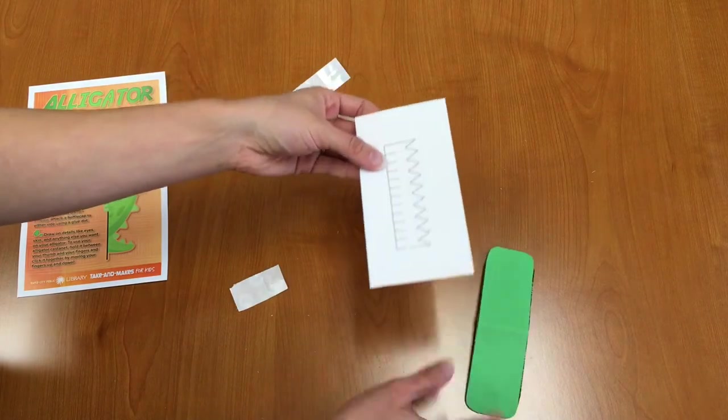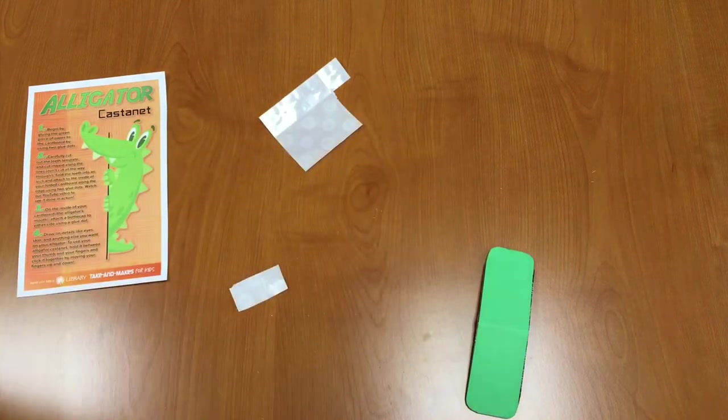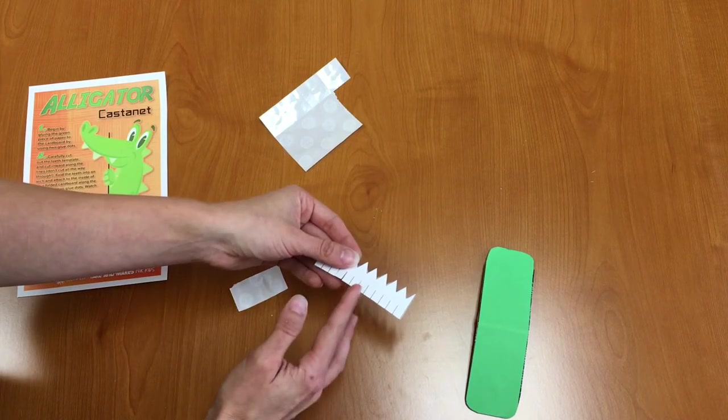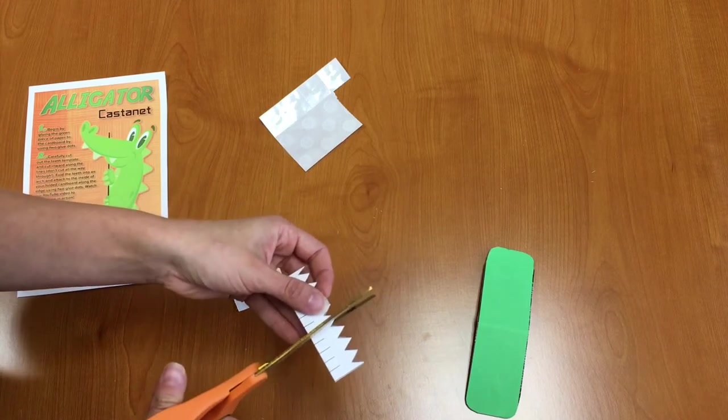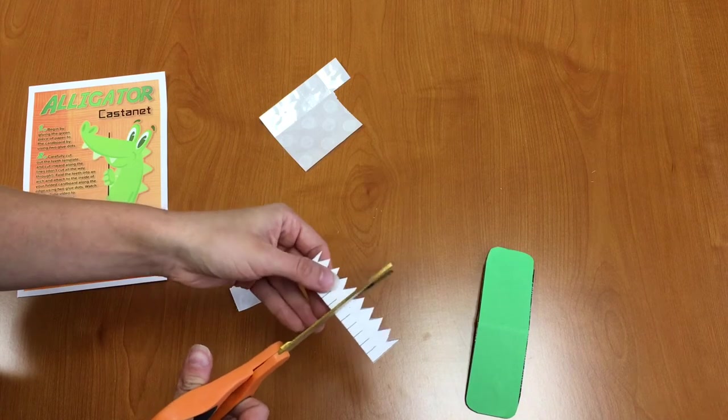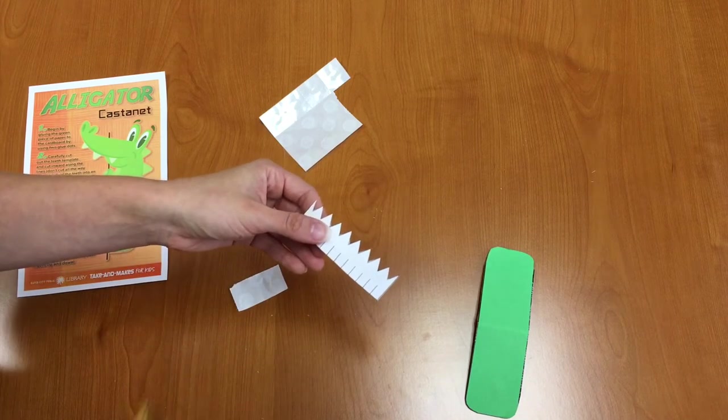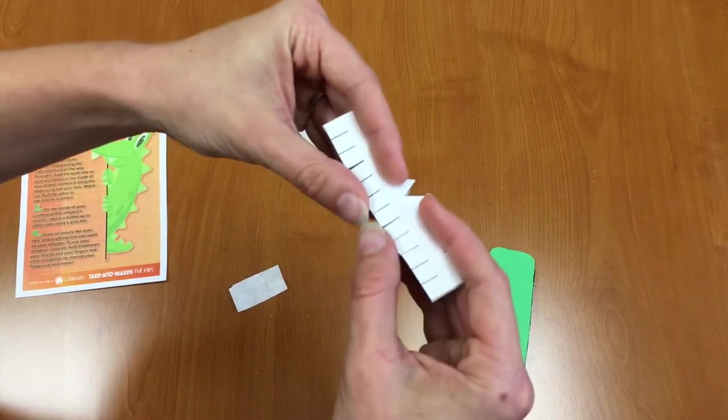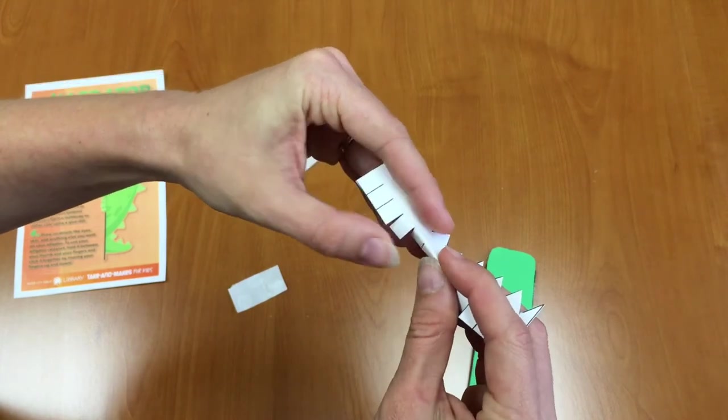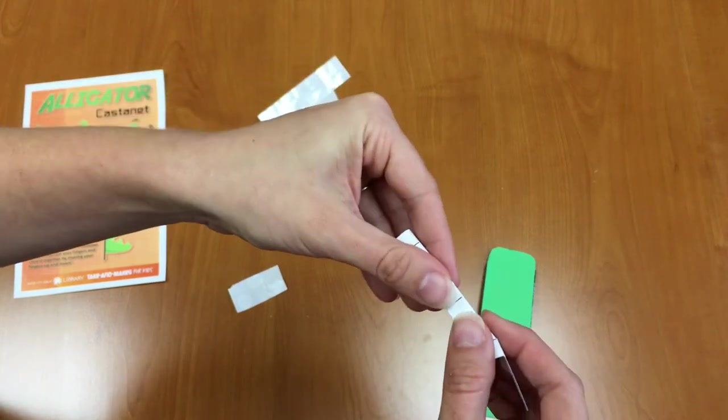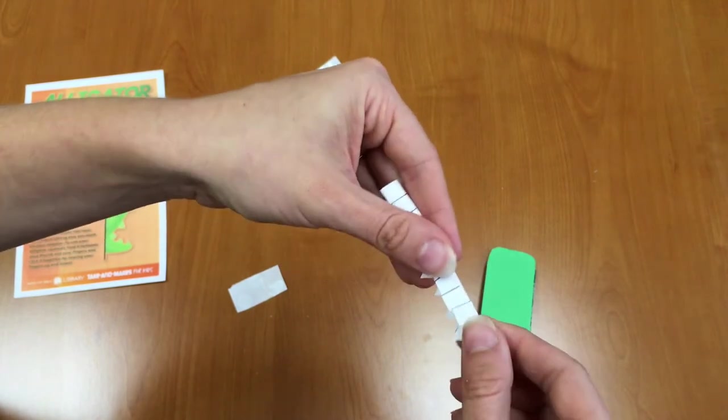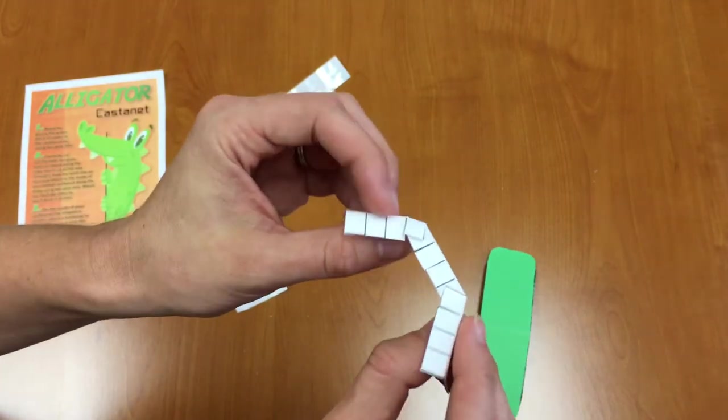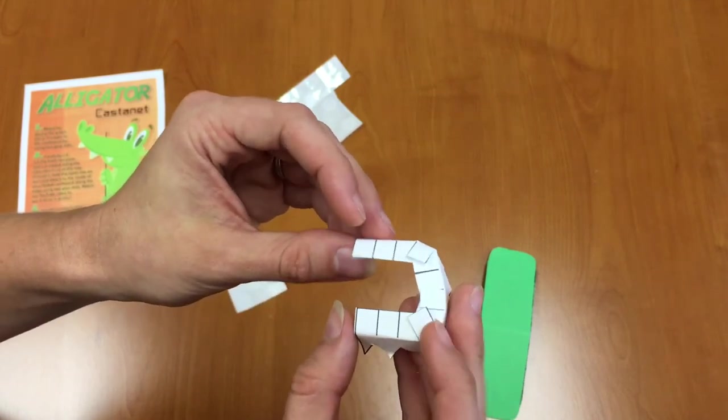Next we're going to cut out our teeth template and so I've already cut mine out and then what you want to do is cut little lines, cut along the little lines. Make sure not to cut all the way through but just along the little lines. And what that will do is that'll help your teeth bend. So first of all what we're going to do is we're going to bend in the paper where the lines end. Just like this. So bend in the paper where the lines end. Make a 90 degree angle and then we're going to bend the paper so that it creates a U.